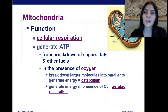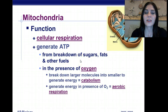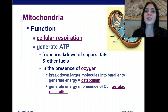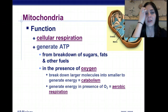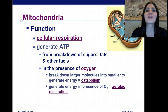The first organelle we're going to talk about is the mitochondria. Cellular respiration takes place in mitochondria, and this is how we generate the majority of our ATP. We generate that ATP from the breakdown of sugars, fats, and other fuels. In the presence of oxygen, we call this aerobic respiration. It breaks down larger molecules into smaller molecules — this is called catabolism. Those enzymes within the mitochondria are catalyzing that reaction, and we call it a catabolic reaction because cats scratch those bonds apart.